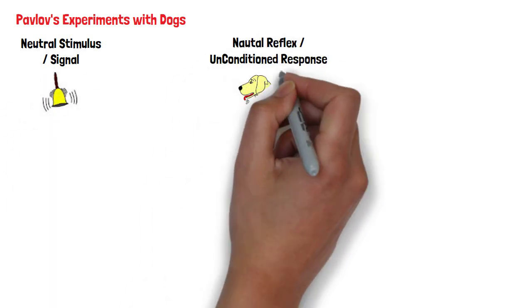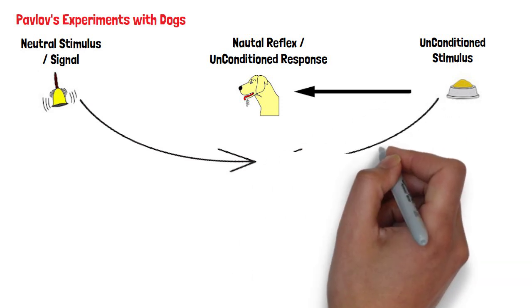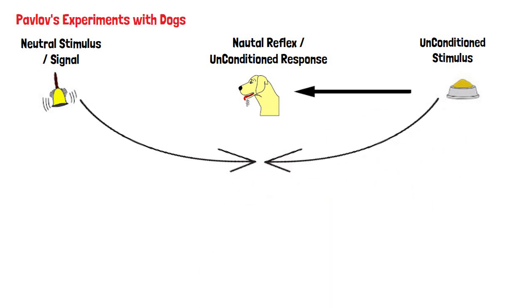One of the best known examples of classical conditioning is Pavlov's classic experiments with dogs. In these experiments, the neutral signal was the sound of a bell and the naturally occurring reflex was salivating in response to food. By associating the neutral stimulus, sound, with the unconditioned stimulus, food, the sound of the bell alone could produce a salivation response.